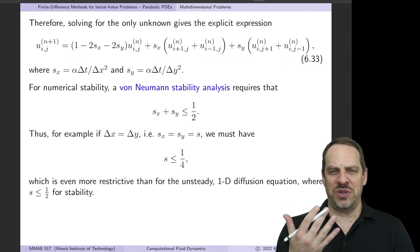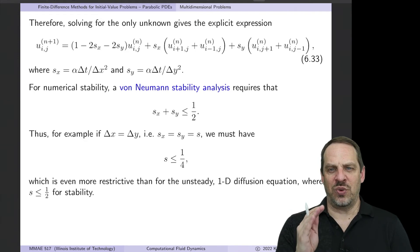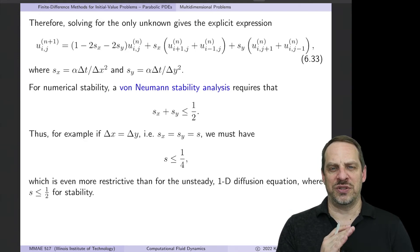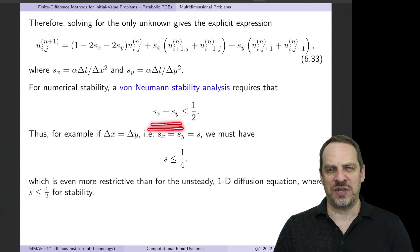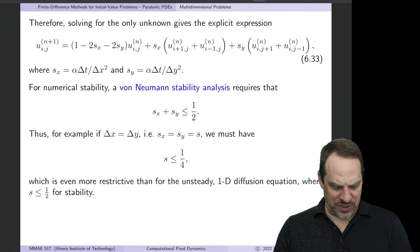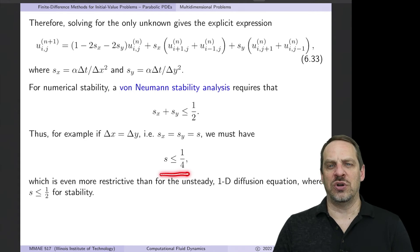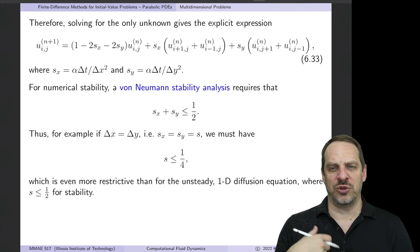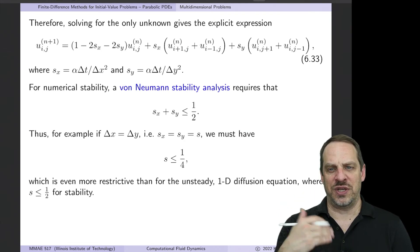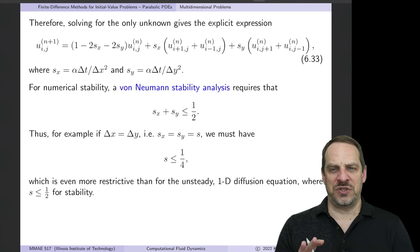Now if you do a von Neumann stability analysis, remember in the 1D case, the requirement for the first-order explicit method to be numerically stable was that S had to be less than or equal to a half. The equivalent requirement is that the sum of the two S's, Sx plus Sy, has to be less than or equal to a half. So if you think about that, for example, if delta x and delta y were the same, then Sx, Sy could just be regarded as S, then that would require that S be less than or equal to a quarter. So by increasing the spatial dimensionality of the problem, we've actually hurt ourselves in terms of numerical stability. Going to three dimensions, it gets even worse. So this is very typical of explicit methods.